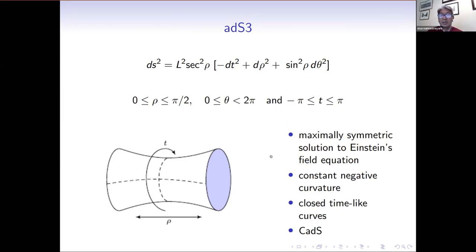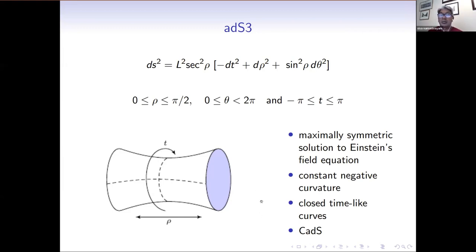We have these somewhat unphysical closed time-like curves, as you can see here in the two-dimensional metric where the angular coordinate is removed. To try and circumvent this, we consider the covering space, whereby essentially the time coordinate is unwrapped and runs from minus infinity to infinity.